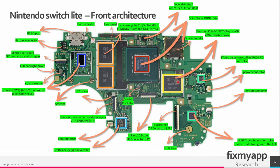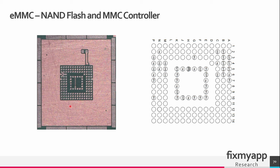The eMMC flash storage is located in this region near the APU. The eMMC is a flash storage that serves as the primary storage medium for the Nintendo Switch. It consists of a NAND flash memory integrated with a flash memory controller and firmware, so the firmware is located on this chip.